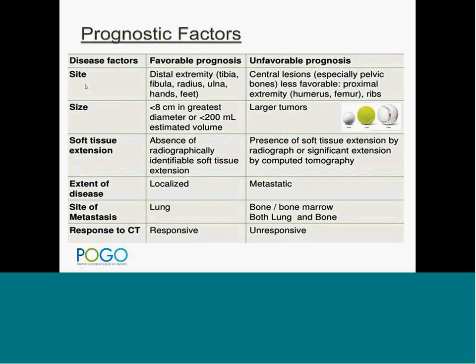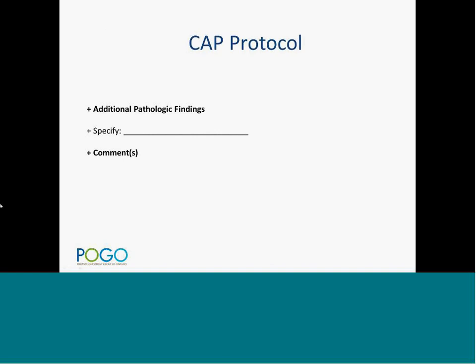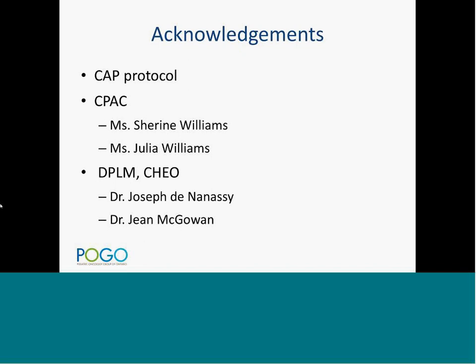In summary, the prognostic indicators for Ewing sarcoma include: site — distal is more favorable, pelvis is worst; size — eight centimeters cutoff; soft tissue extension — mainly assessed radiologically; extent of disease — localized versus metastatic; site of metastasis; and response to chemotherapy. Pathological fractures in Ewing sarcoma are uncommon and per the Children's Oncology Group they are not taken as a poor prognostic indicator.